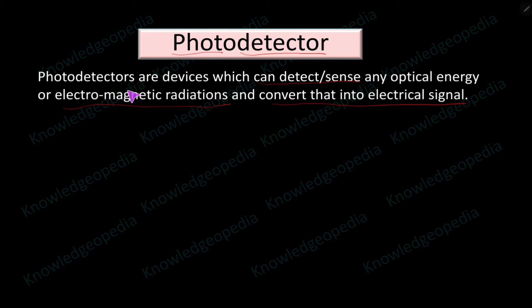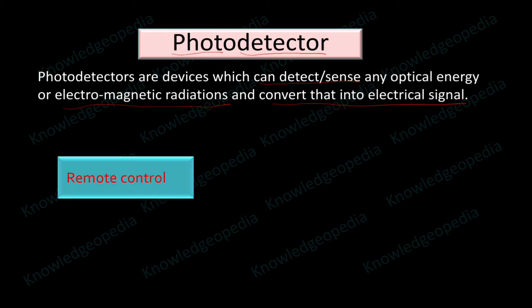The definition of a photo detector: photo detectors are devices which can detect or sense any optical energy or electromagnetic radiations and convert that into electrical signal. Nowadays all of you are using remote controls to switch on different electrical devices like your TV, AC, etc. Let us discuss about that. This is a remote control, and with the help of this remote control you are interested to switch on or switch off an electrical appliance.